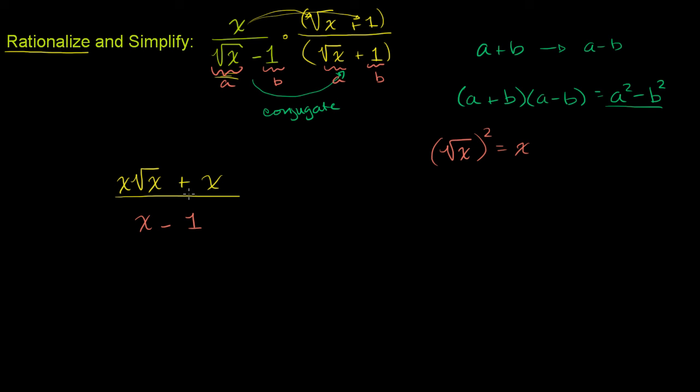You could write, I guess one thing that you could write is you could write this x times the square root of x. You could write that as, since that's x to the first power times x to the 1 half power, you could write that as x to the 3 halves power. Not clear if that's actually a simplification. But this is about as good as you can do, at least from my point of view.